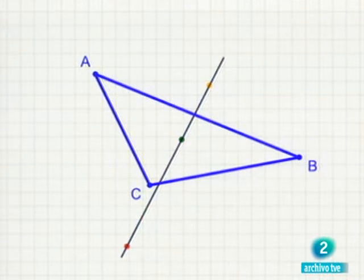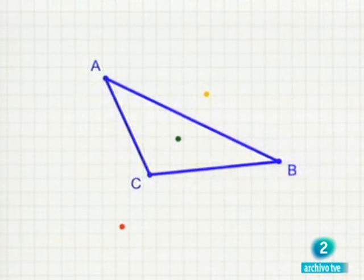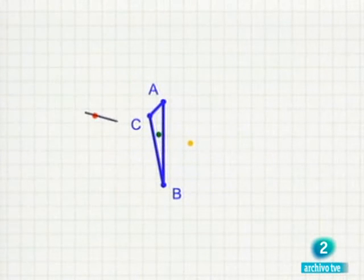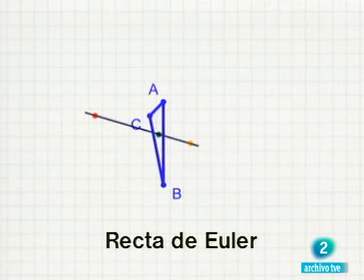Lo que en el siglo XVIII nadie sospechaba es que esos tres puntos, no importa de qué triángulo se trate, siempre están alineados, es decir, están sobre una misma recta, la recta de Euler.